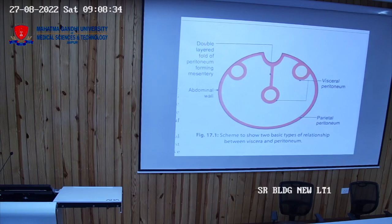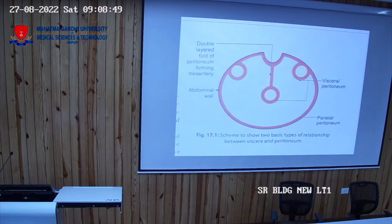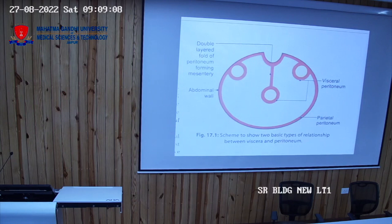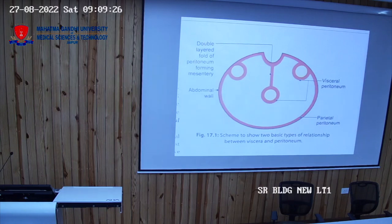The part of the peritoneum which is lining the viscera is called the visceral peritoneum. See the diagram — this is the parietal peritoneum, and as the viscera invaginate inside, they have their own layer of peritoneum closely adherent to them — that is the visceral peritoneum.